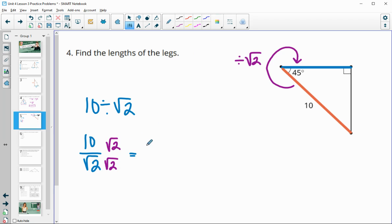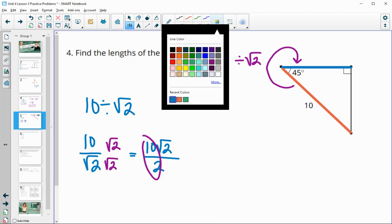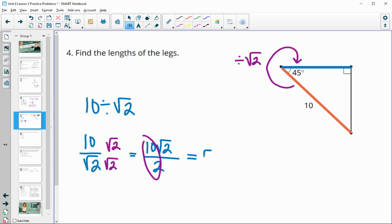And then we could simplify here. 10 divided by 2 is 5. So we would end up with 5 square root of 2. So one of the answers. So maybe you're allowed to leave it as 10 over square root of 2. That's fine.